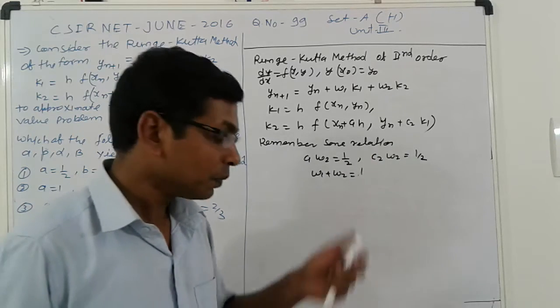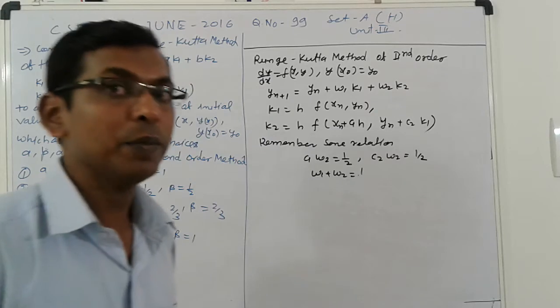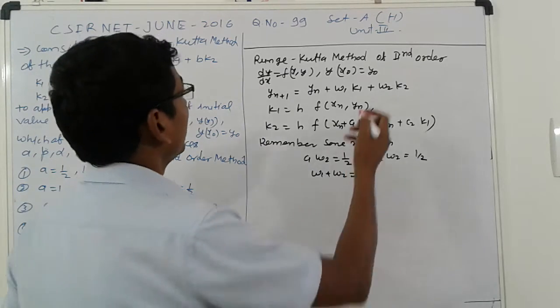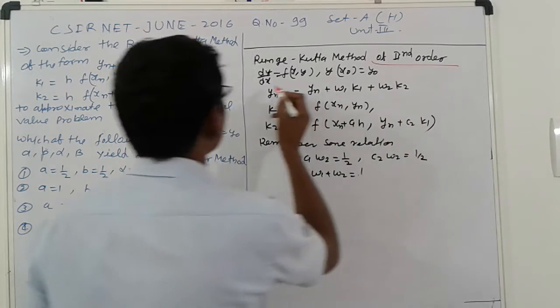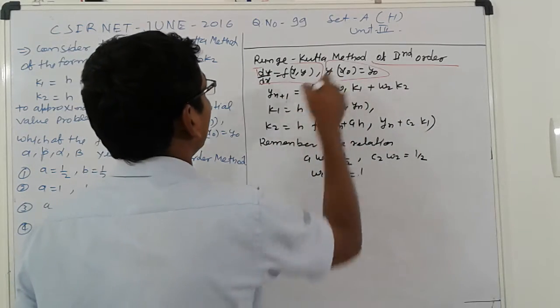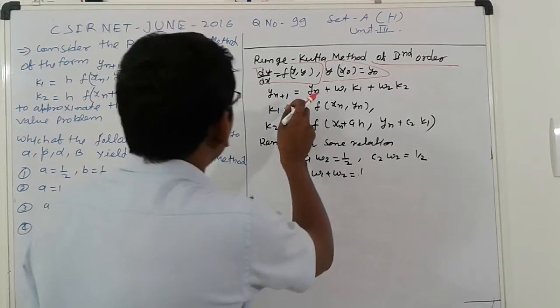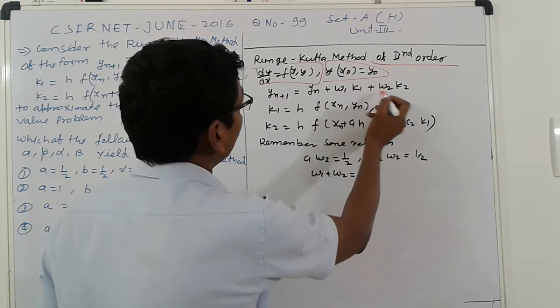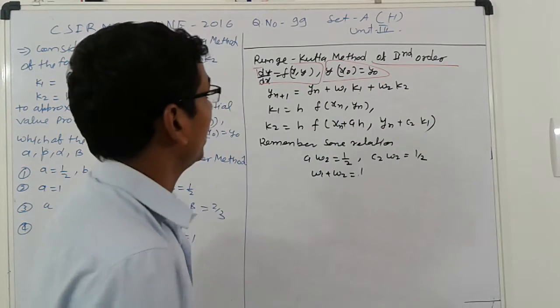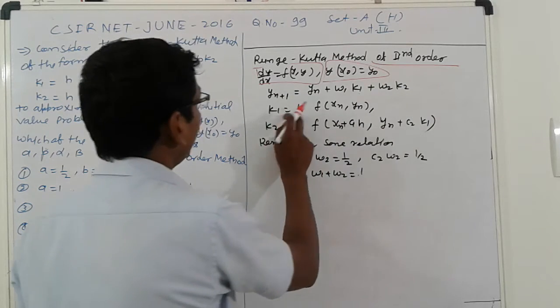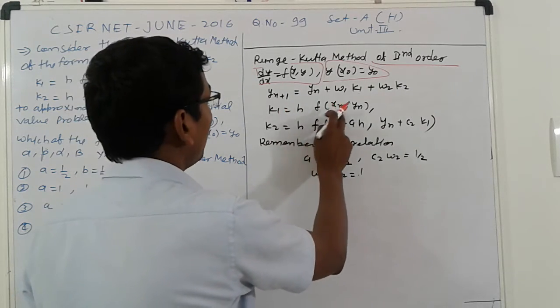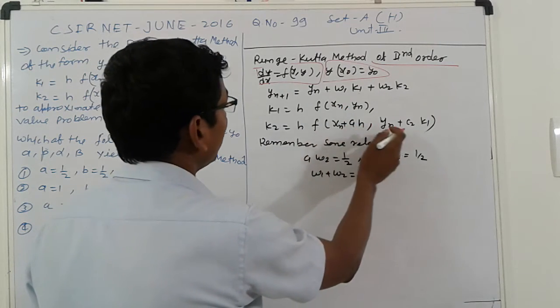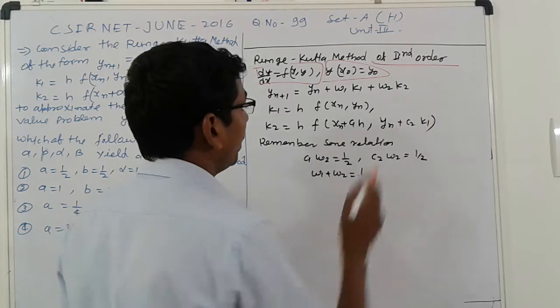First of all, here I will describe this Runge-Kutta method of second order. First linear differential equation is a boundary condition. Suppose n term y_(n+1) equals y_n + w_1*k_1 + w_2*k_2. And k_1 equals h*f(x_n, y_n), and k_2 equals f(x_n + c_1*h, y_n + c_2*k_1).